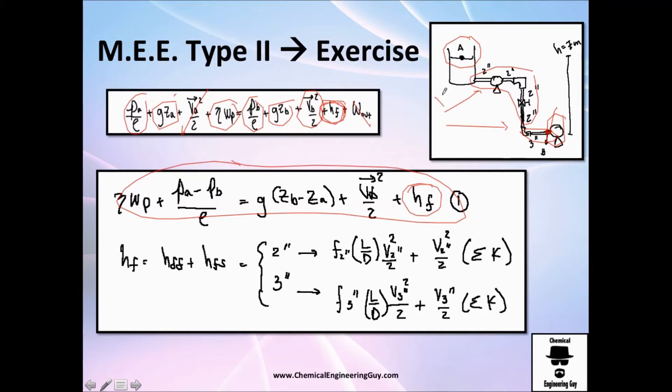I have this friction factor, or loss, or energy loss due to friction, and this depends on pipe number two and pipe number three. Each one of them has different velocities, different Reynolds numbers, different friction factors, and therefore, you have different energy loss. So you will need to split this into two. Pipe number two and pipe number three.